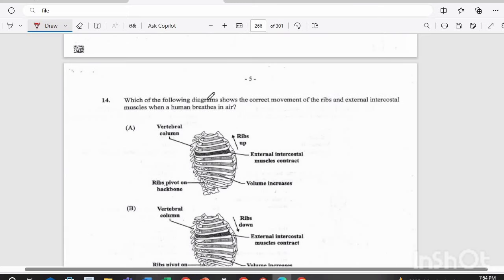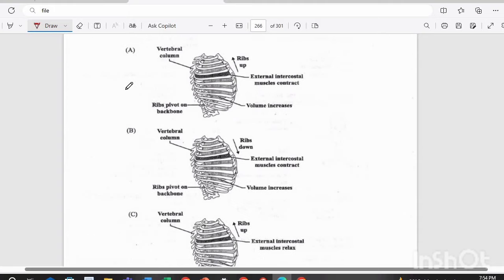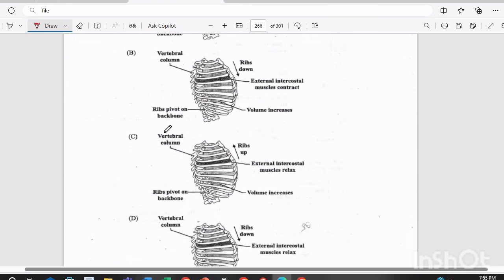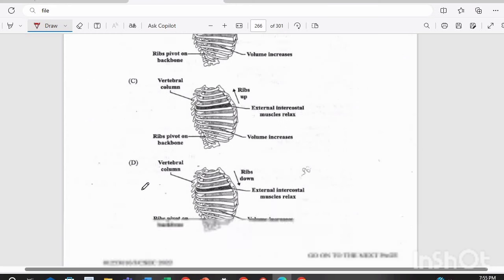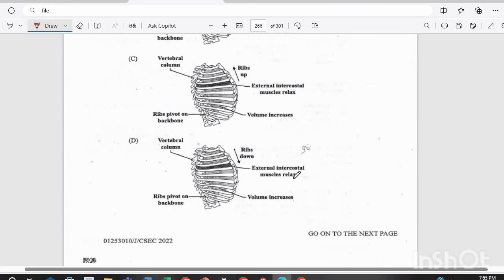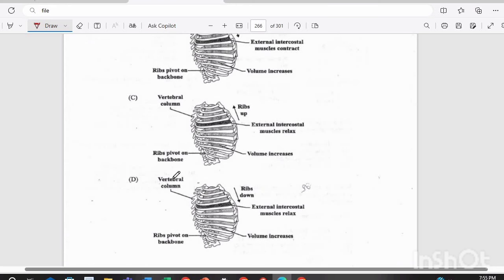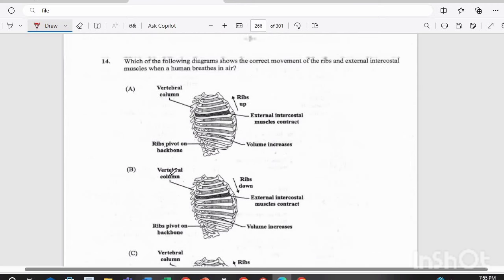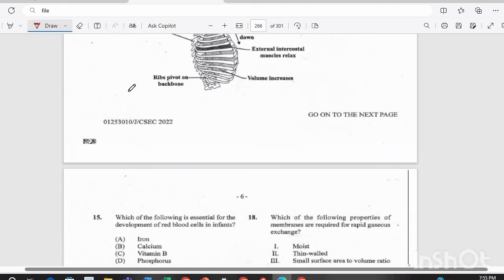Item 14. Which of the following diagrams shows the correct movement of the ribs and external intercostal muscles when a human breathes in air? Is it A, where the ribs move up and the external muscles contract and the volume increases? Is it B, the ribs move down, the volume increases, and the external intercostal muscles contract? Is it C, the ribs move up, the external intercostal muscles relax, and volume increases? Or is it D, the ribs move down, the external intercostal muscles relax, and volume increases? And the answer there is A. The ribs will move up, the external intercostal muscles will contract, and the volume will increase.